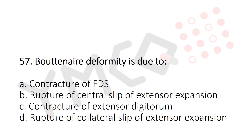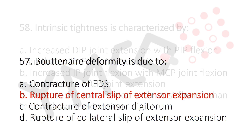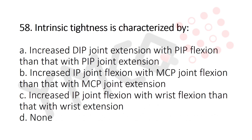Question 57: Boutonniere deformity is due to — Option A: contracture of FDS, Option B: rupture of central slip of the extensor expansion, Option C: contracture of extensor digitorum, Option D: rupture of the collateral slip of the extensor expansion. The answer is Option B, rupture of central slip of the extensor expansion.